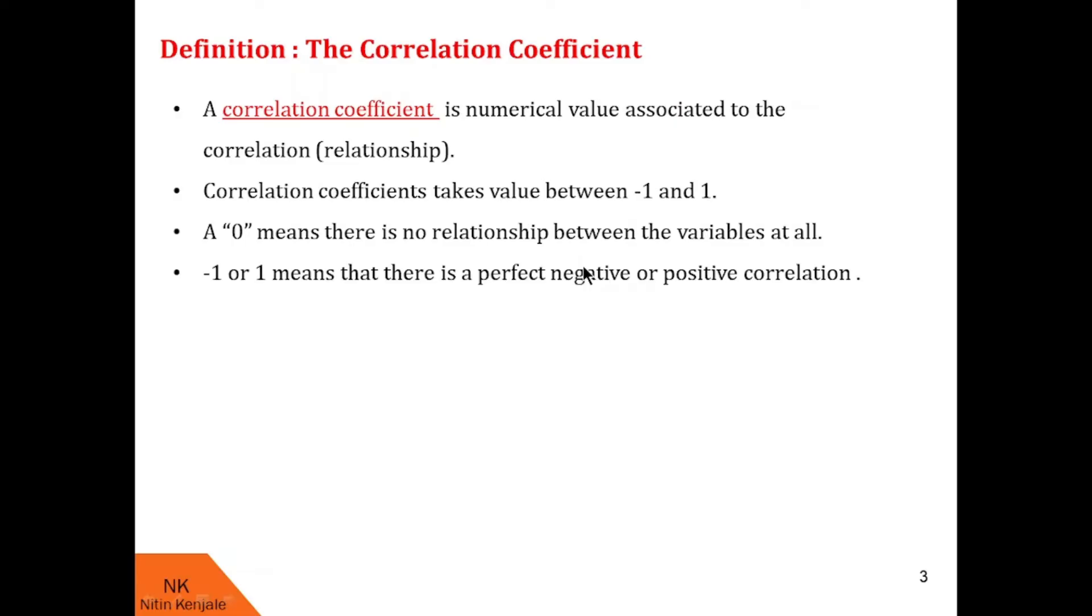Minus 1 and 1 means there is a perfect negative or positive correlation respectively. Negative or positive correlation here refers to the type of graph that the relationship will produce.